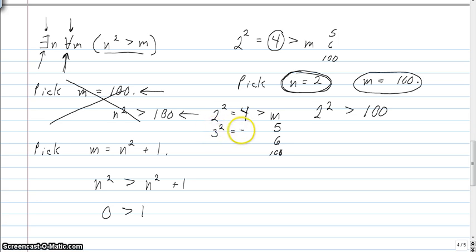But if I had instead picked n equal to 3, 3 squared is 9, right? If I had thought about it that way, well, then these values for m, 5 and 6, those wouldn't have worked because those are less than 9. So the thinking here was that the value that I chose for m depends on what I had already chosen for n.